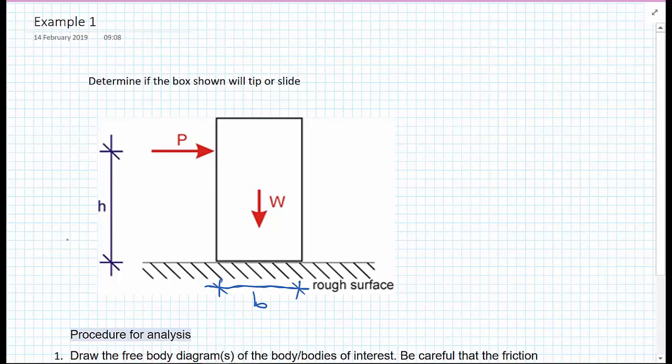The height isn't given, but we have the distance to where the force P is applied horizontally. The box has a weight W and a width of B for breadth. The box is sat on a rough surface, so we would expect friction forces between the box and the surface.